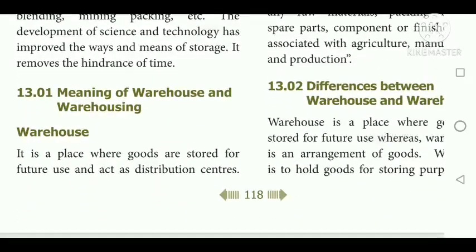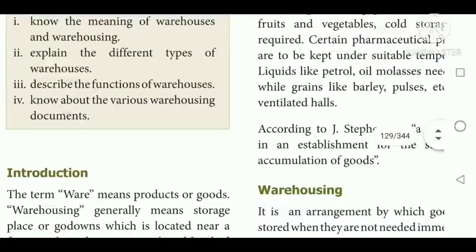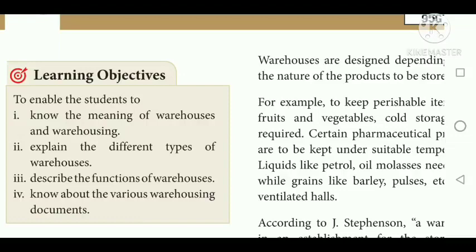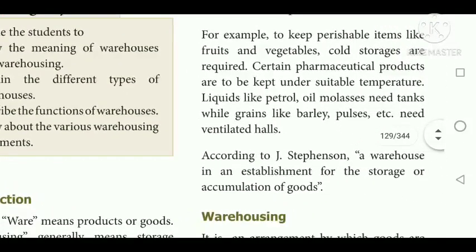The meaning of warehouse: a place where goods are stored for future use, and it acts as a distribution center. From the warehouse, goods are distributed to various retail or wholesale shops according to market conditions. For example, perishable goods like fruits and vegetables are stored in cold storage warehouses; certain pharmaceutical goods are kept at suitable temperatures; and liquids like petrol, oil, and molasses need tanks, while grains like barley and pulses need ventilated hulls. So depending upon the goods, the storage places vary.